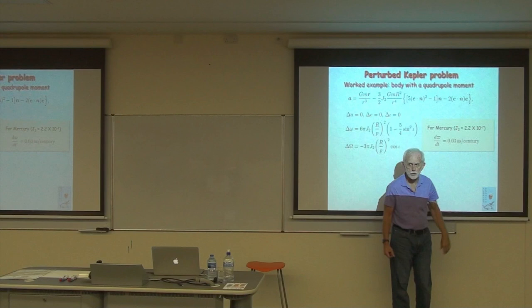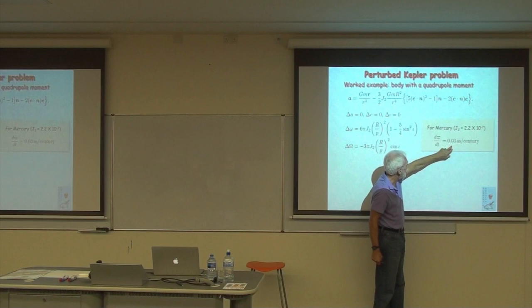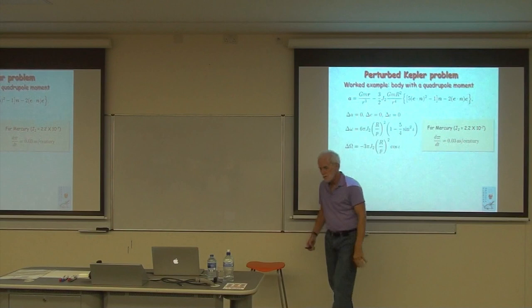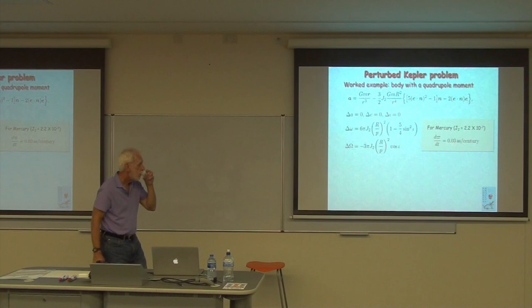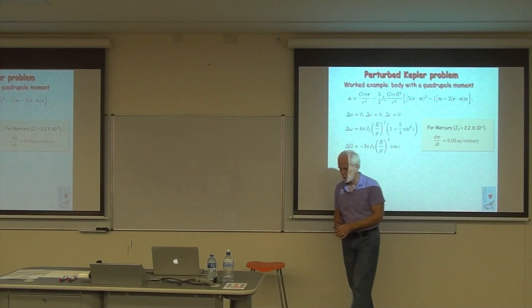From those helioseismology models, they determined the quadrupole moment to be 2.2×10⁻⁷, giving a small effect. The Brans-Dicke theory with a small value of the coupling constant is no longer viable — you have to pick a large value. So general relativity works fine for Mercury's perihelion. With modern data on Mercury's orbit, the quadrupole moment can also be estimated directly from its effect on Mercury's orbit, consistent with the helioseismology value.